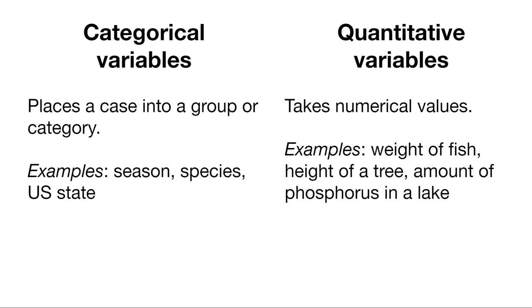We can generally categorize variables that we're interested in as being either categorical or quantitative. Categorical variables are placing cases into groups or categories. That could be species, that could be the season of the year. Are you in fall, winter, spring, or summer? What about the U.S. state that you're looking in?